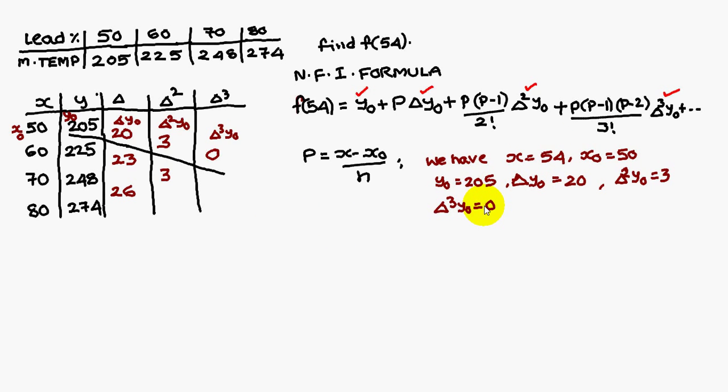I am writing the values here. Therefore p value is, x value is 54, x₀ is 50 by h is, h is the difference. 50 to 60 it is 10, 60 to 70 is also 10, 70 to 80 is also 10. Therefore that is 0.4.